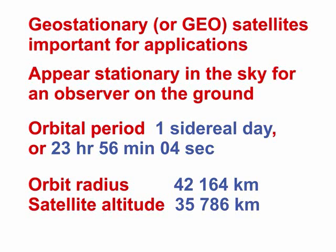The key feature of such satellites is that they appear at the same point in the sky for an observer on the ground. To appear stationary, the satellite must be in an orbit with an orbital period of one sidereal day, or 23 hours, 56 minutes and 4 seconds. Orbit radius is 42,164 kilometers, with the satellite located 35,786 kilometers above the Earth's surface. The orbit must be circular, that is, with eccentricity zero, and equatorial, that is, with inclination zero.